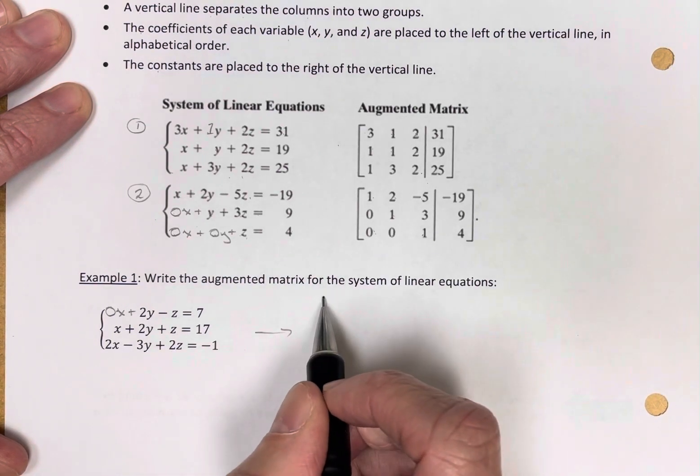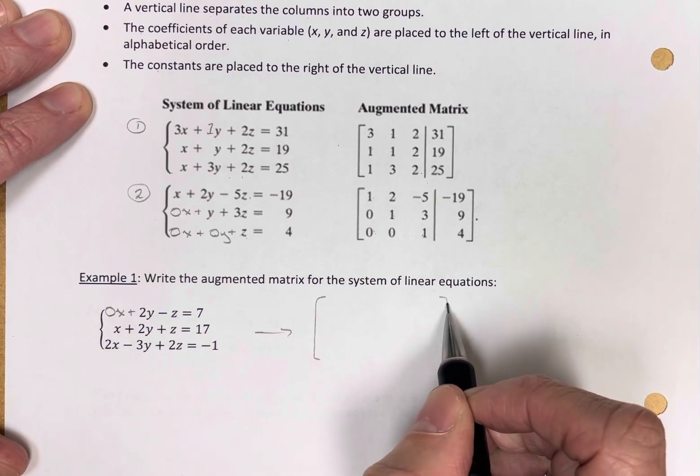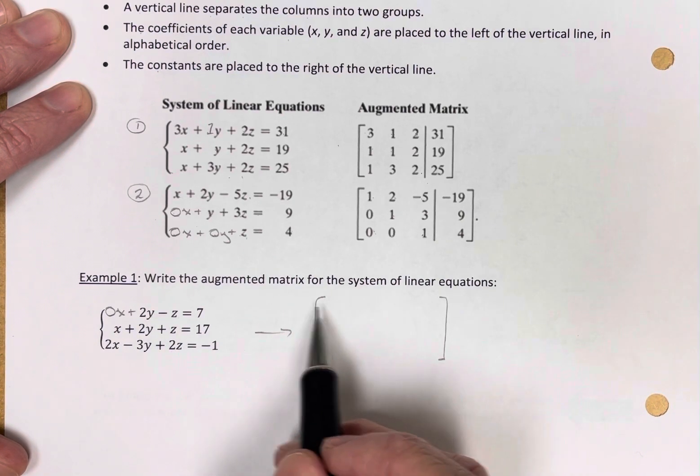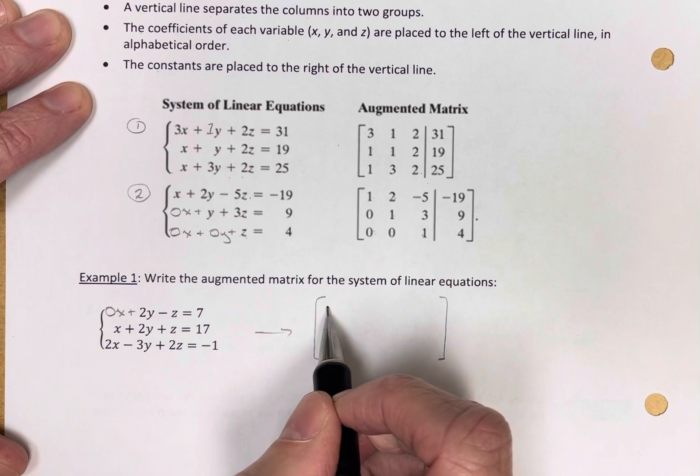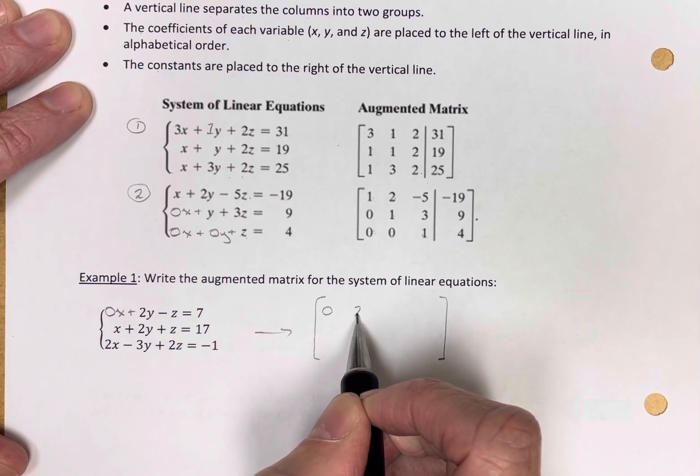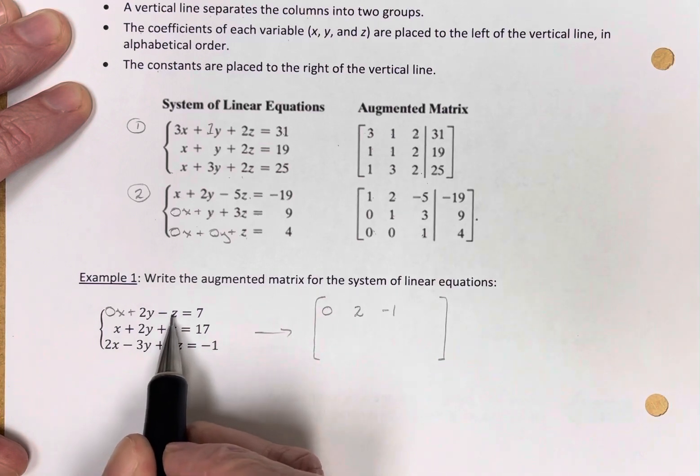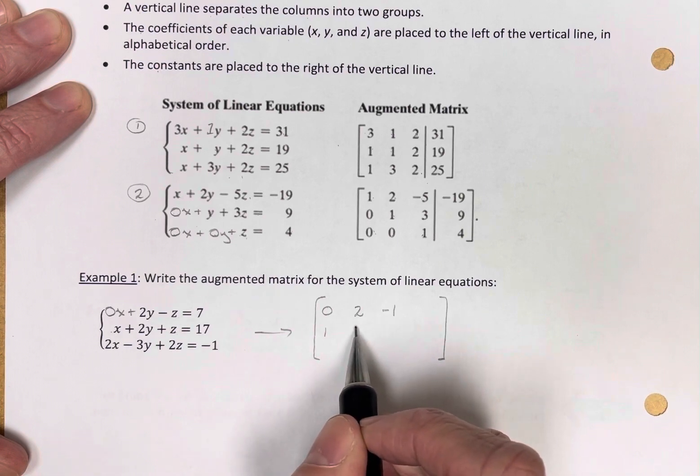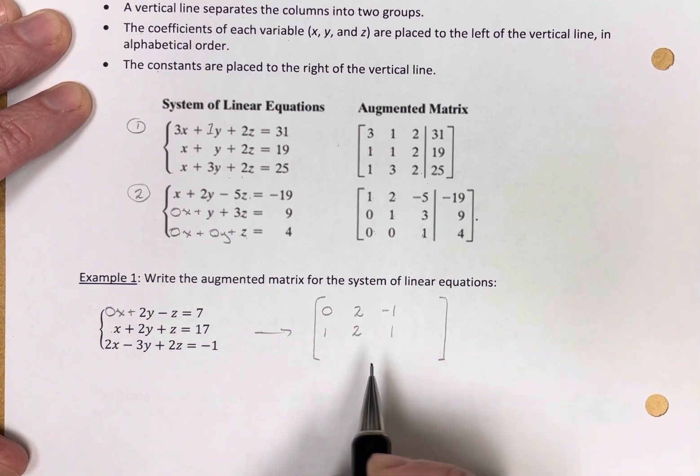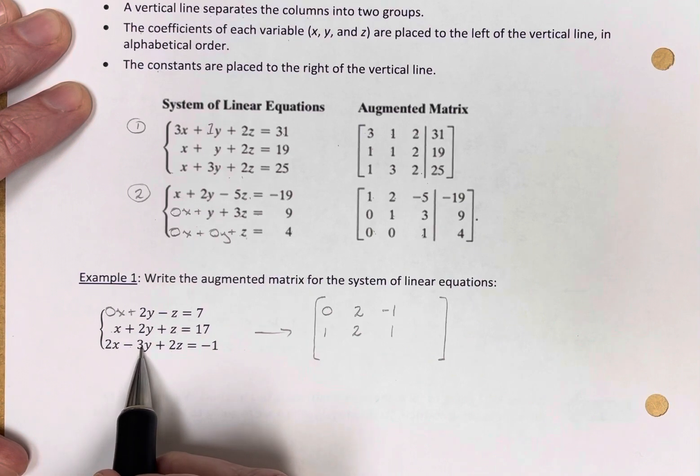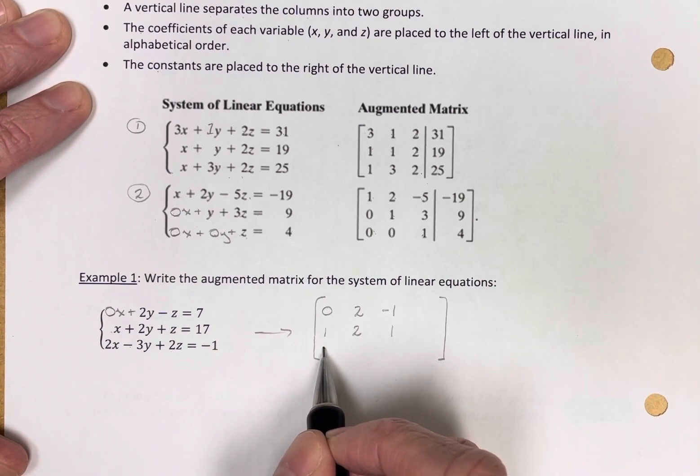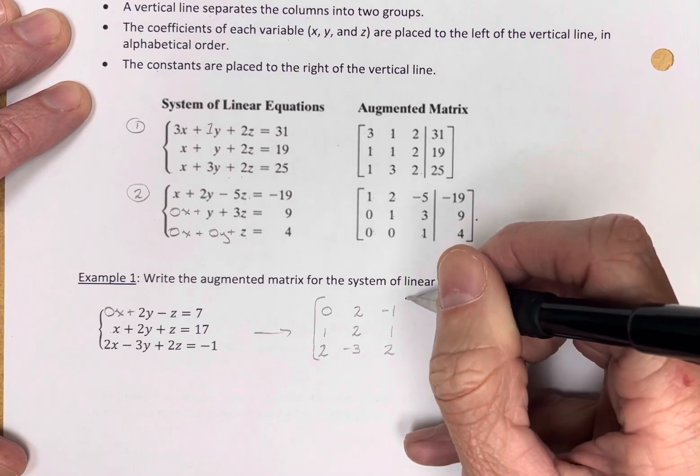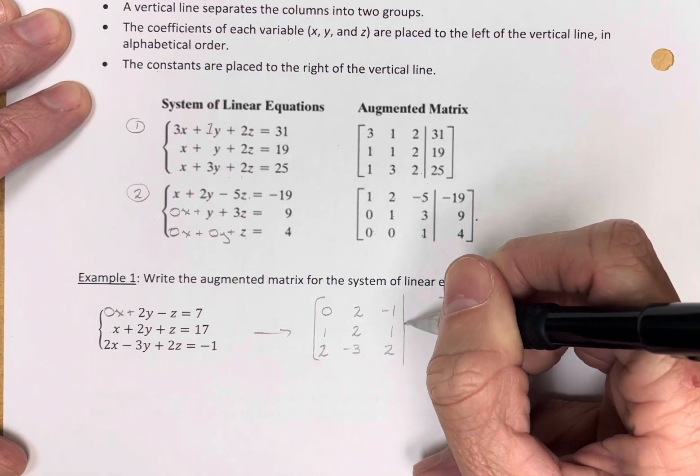What does the augmented matrix look like? I need some brackets. The coefficients go in order. My first equation has zero x's, two y's, and a negative one z. Then I have one x, two y's, and one z in my second row. And I have two x's, negative three y's, and two z's in the third equation. And then I draw my vertical line.